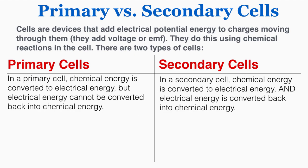In a primary cell, chemical energy can be converted to electrical potential energy, but electrical energy cannot be converted back into chemical energy because the cell cannot be recharged. In comparison, in a secondary cell chemical energy is converted to electrical energy and electrical energy is converted back into chemical energy. This means we can use electrical energy — voltage — to charge secondary cells. So when you plug your phone into the wall to charge, you're converting electrical energy into chemical energy in your phone's battery to be used later. That can happen in a secondary cell but not in a primary cell.